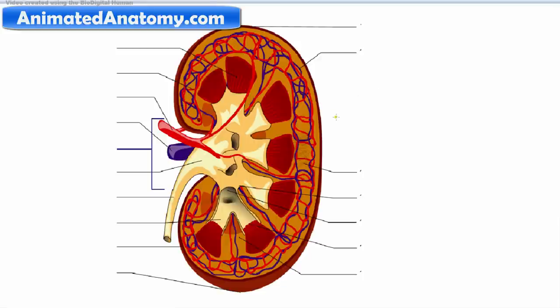The substance or the parenchyma of the kidney is divided into two major structures. The outer part is called the renal cortex and here you have the renal medulla.